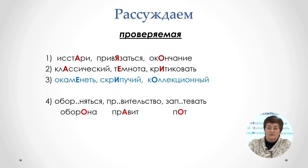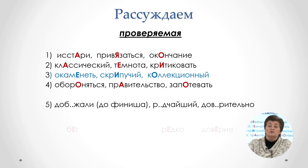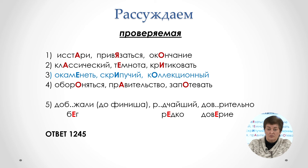Четвёртая строка является ответом на вопрос, потому что к каждому из данных слов мы можем подобрать проверочное слово. Обратите внимание на последнее: «запотевать» — проверочное слово «пот». Пятая строчка тоже будет ответом: «бег», «редко» и «доверие» — проверочные слова к «добежали», «редчайший» и «доверительно». Таким образом, четыре цифры являются правильным ответом.